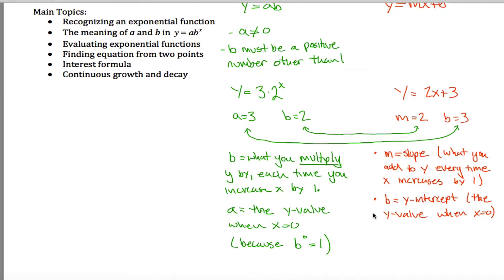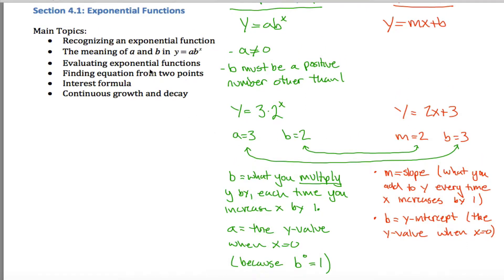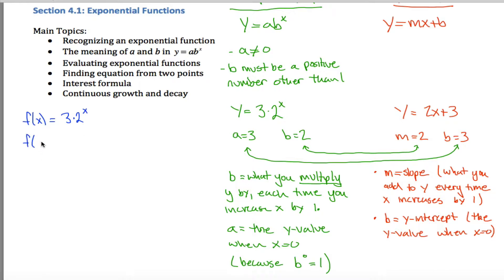Let's get into evaluating exponential functions. I have f of x equals 3 times 2 to the x power. I can figure out f of 3 by replacing x with 3: it's 3 times 2 to the 3rd power. Here you want to be careful with order of operations — you do exponents before multiplication. So I don't do 3 times 2 first; I cube the 2. Two cubed is 8, and 3 times 8 gives me 24.